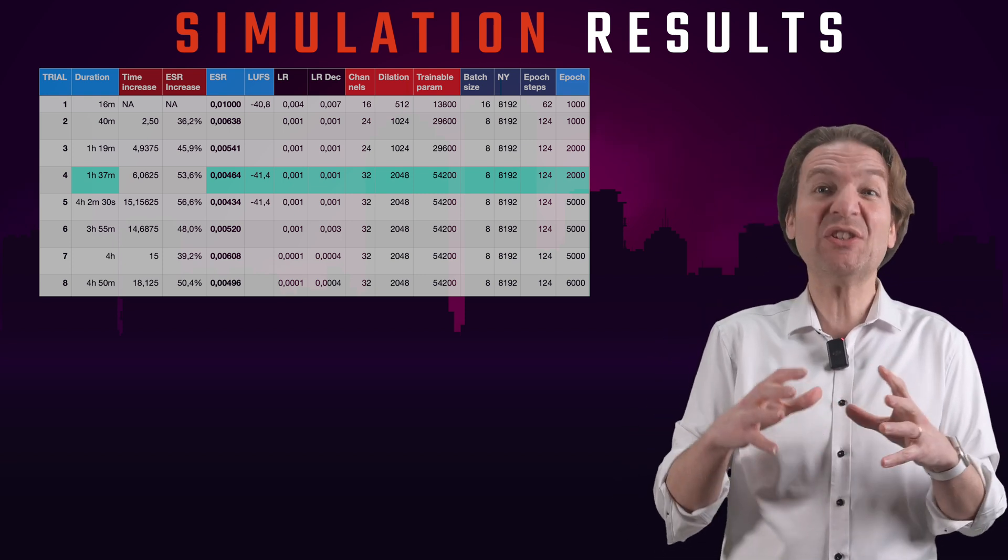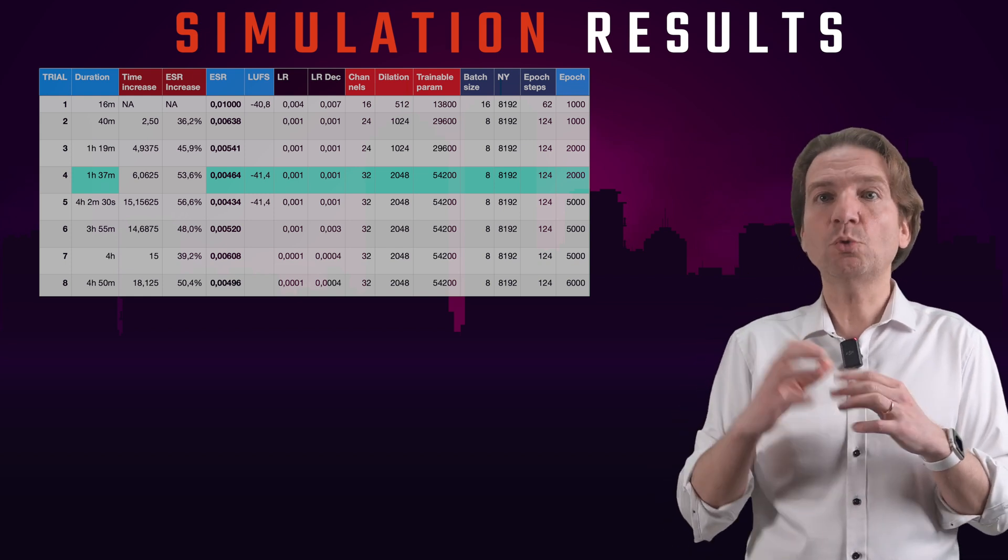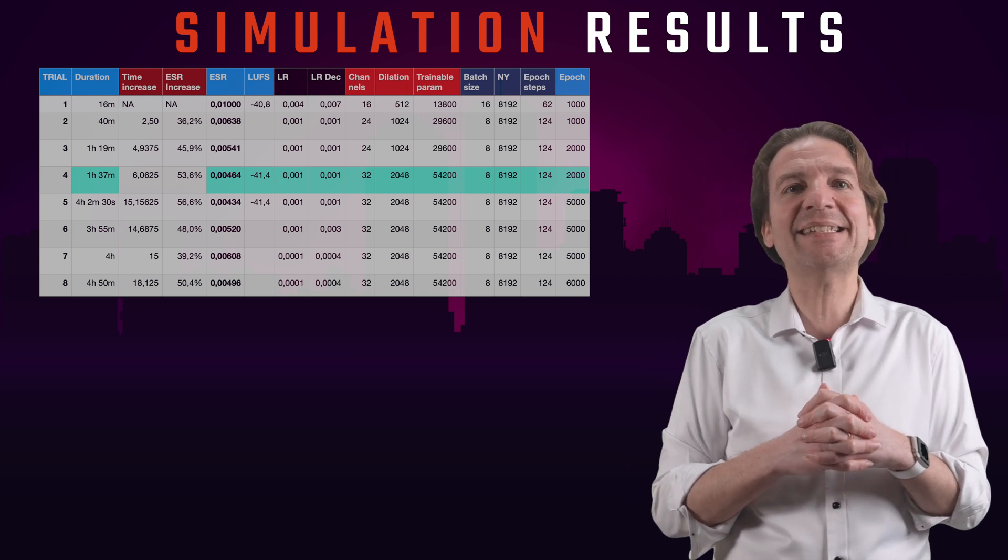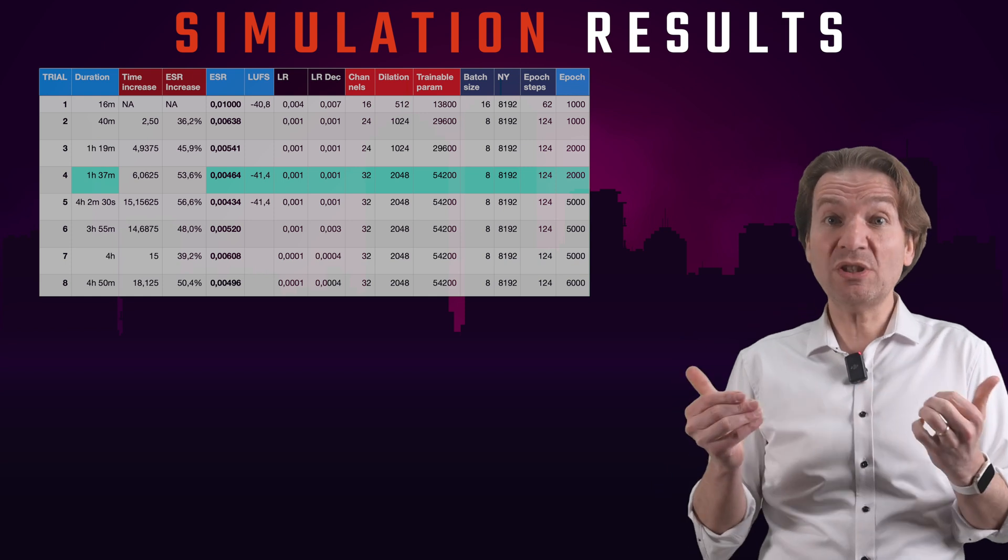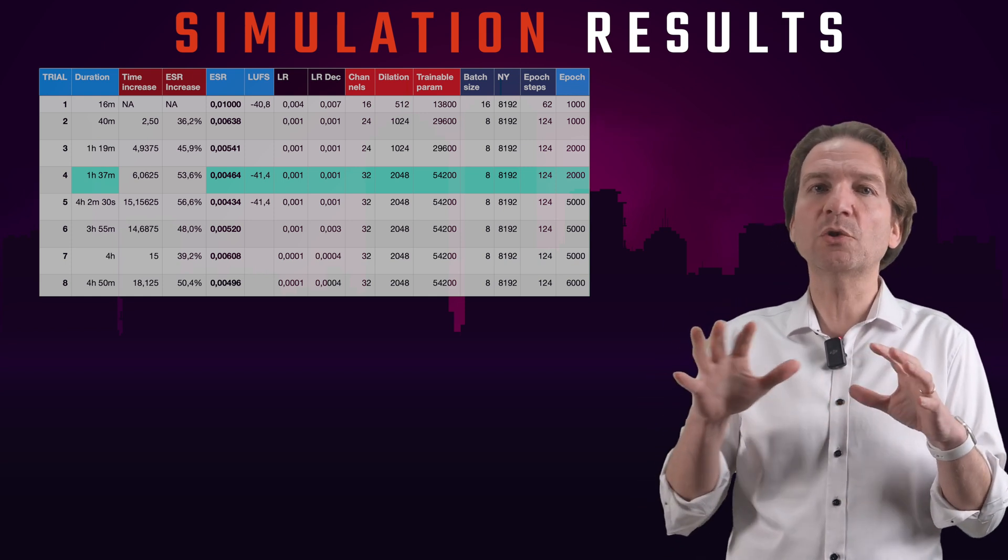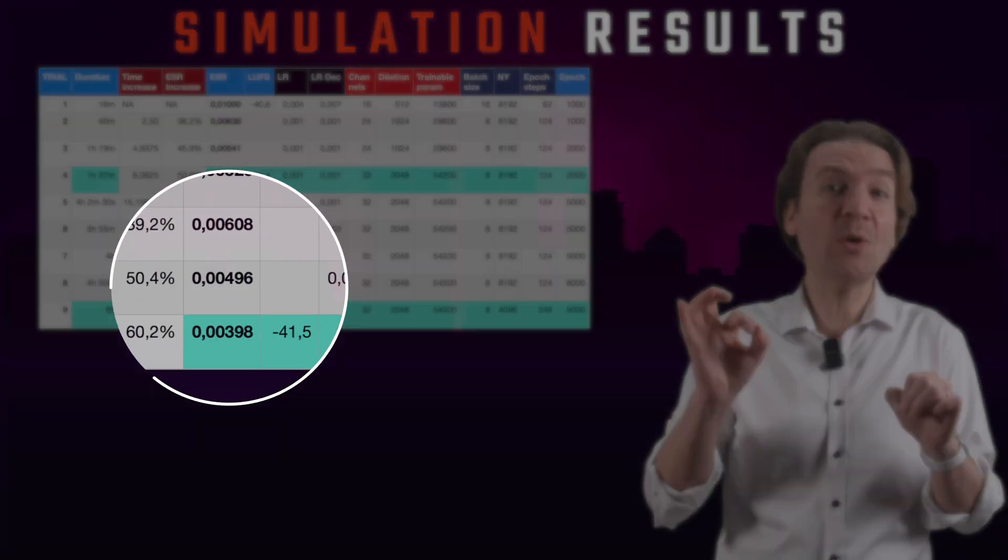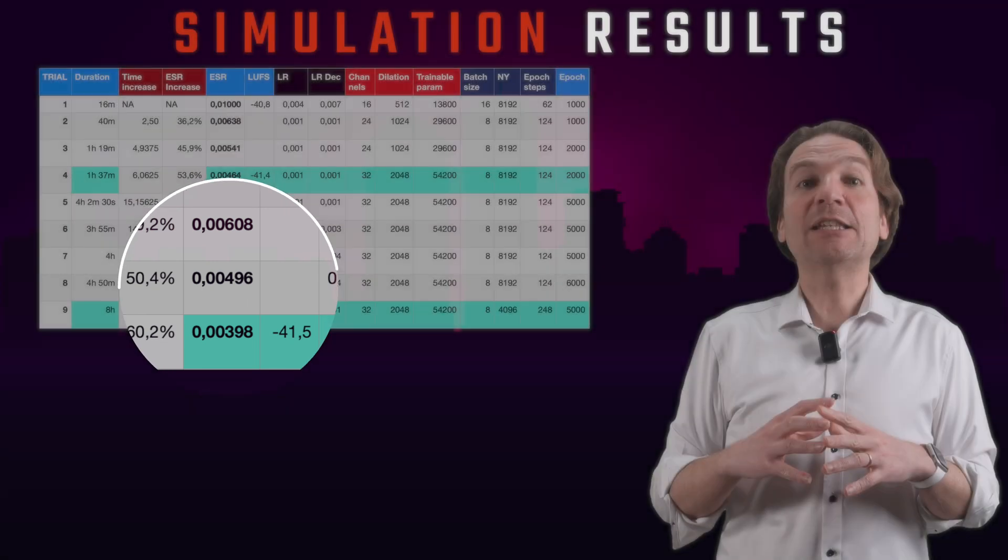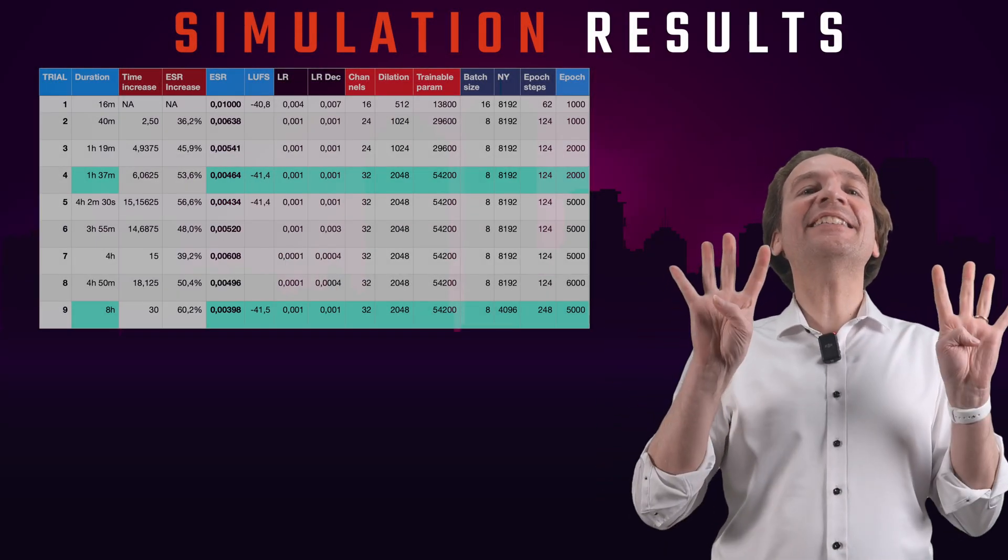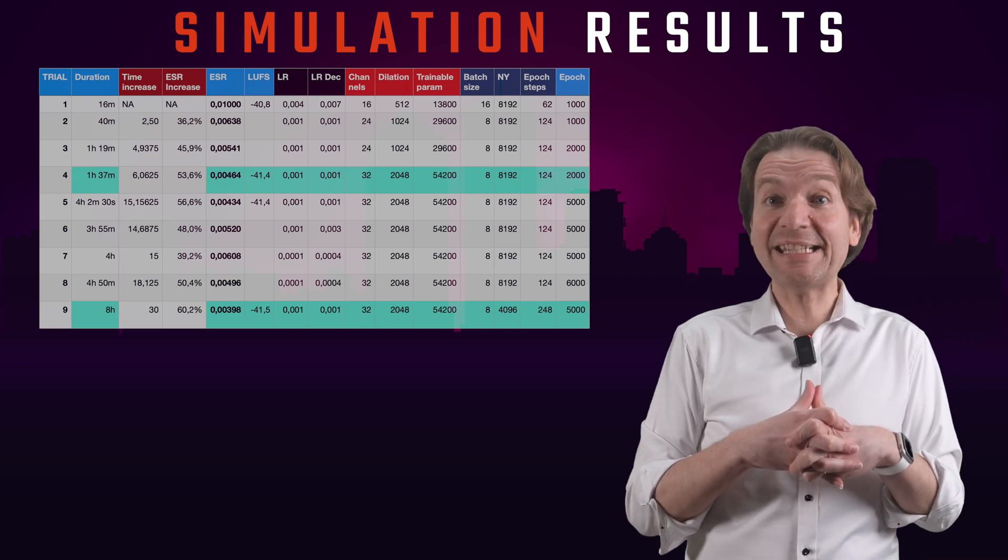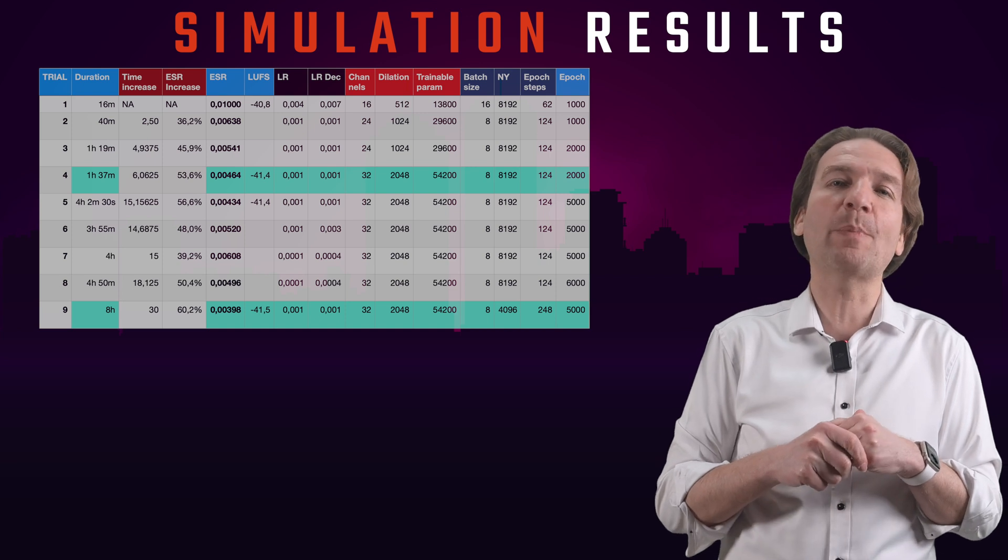And now trial number 9. I want to change also the mysterious NY parameter, dividing it by 2, and therefore setting it to 4096, running for 5000 epochs, and reducing the training rate to the most performing one used in our trial number 4. Well, I reached 0.00398, and my computational time went up to 8 hours. So, an increase of 60% in quality with basically 30 times more processing power. Wow.